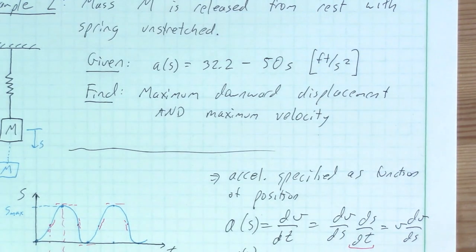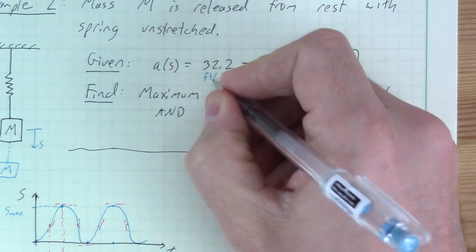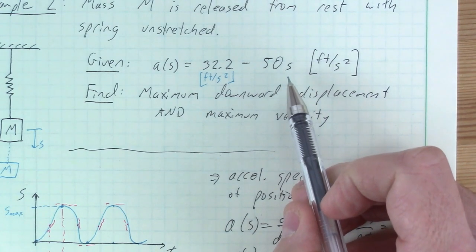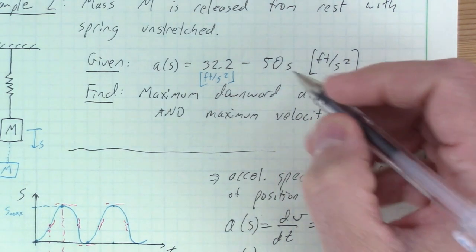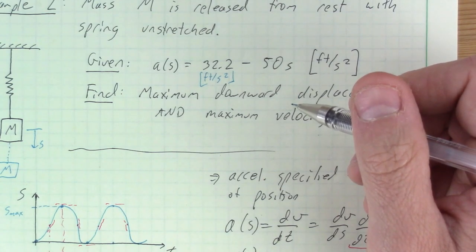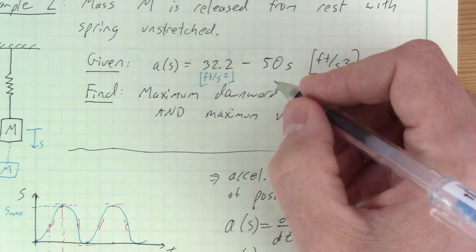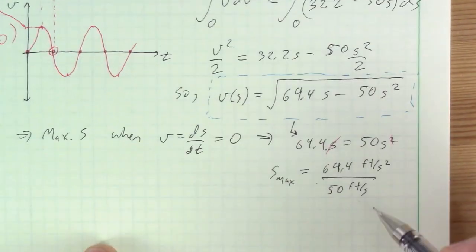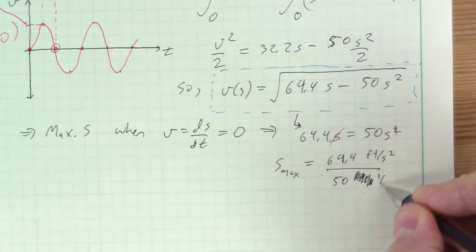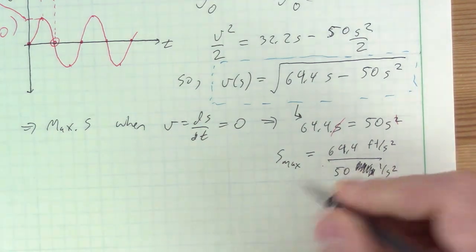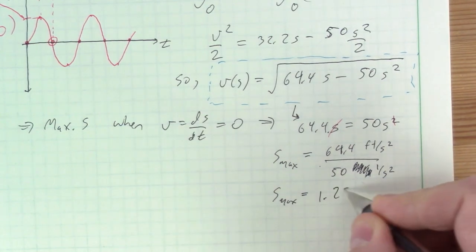Correcting the units — 50 actually has units of 1/s², not feet/s — so the ratio 64.4 (ft/s²) divided by 50 (1/s²) does give units of feet. Therefore s-max equals 1.288 feet.